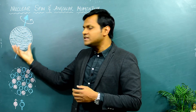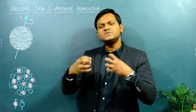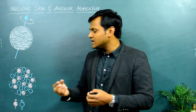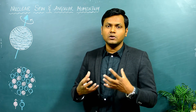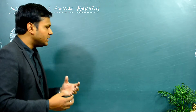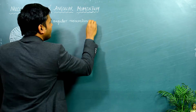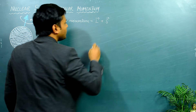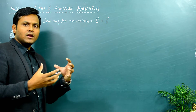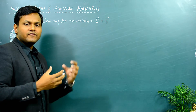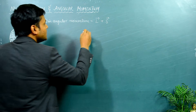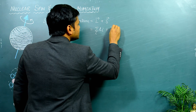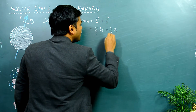So the nucleus itself behaves as a singular particle which has a spin angular momentum of its own, which is basically the result of the summation of all the orbital angular momenta of the individual constituent particles as well as the summation of all the spin angular momenta of the individual constituent particles. Therefore, the total angular momentum of any given nucleus is a vector sum of the orbital angular momentum L and the spin angular momentum S of the constituent particles.